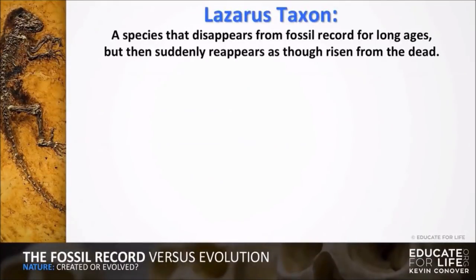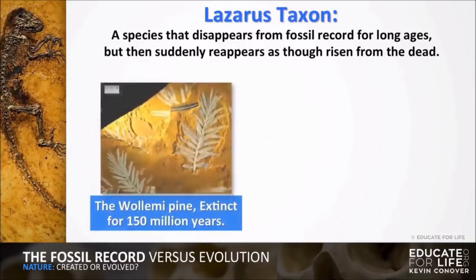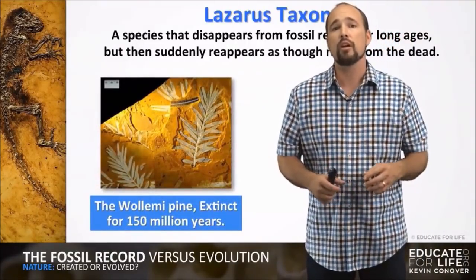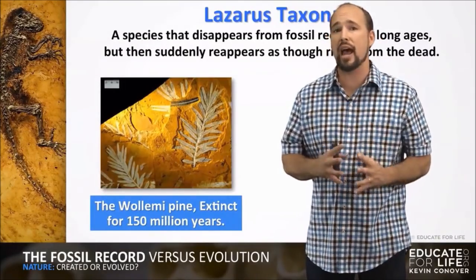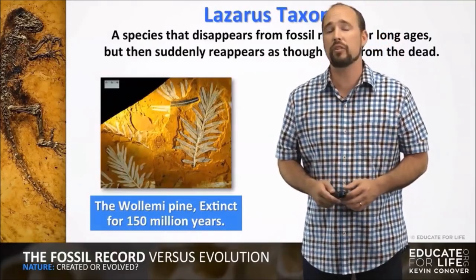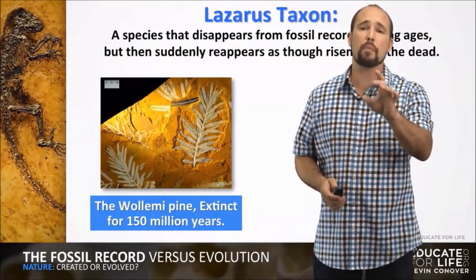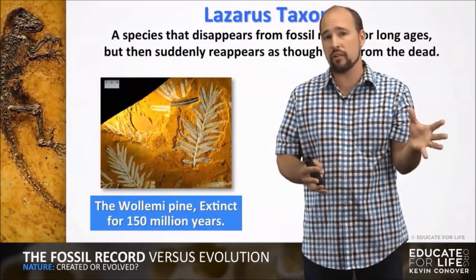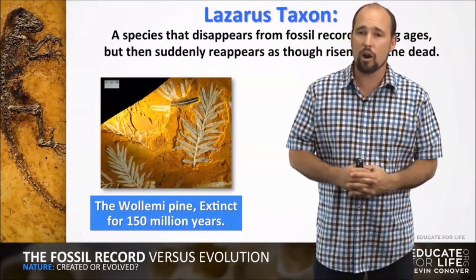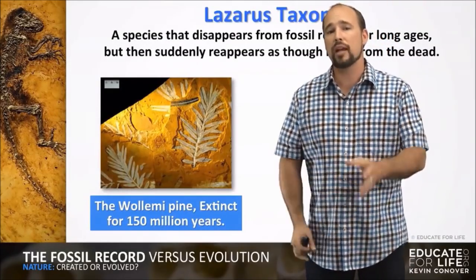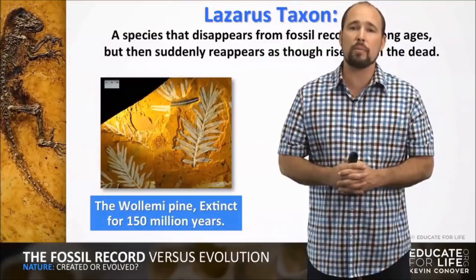There's something called a Lazarus taxon. This is a species that disappears from the fossil record for long ages but then suddenly reappears as though risen from the dead, like Lazarus in the Bible. The Wollemi Pine was supposedly extinct for 150 million years — they were dating these fossils to 150 million years. We do talk about the dating of fossils in another lesson, and we'll talk about how they arrive at dates with things like carbon dating and so forth, but for now we'll just go with what their claim is here.